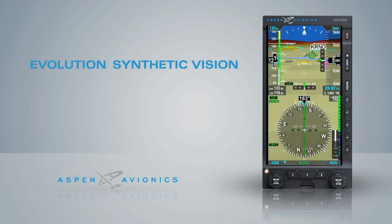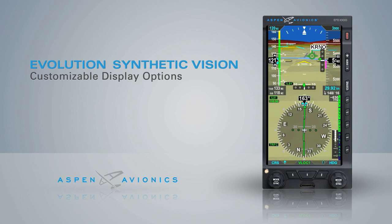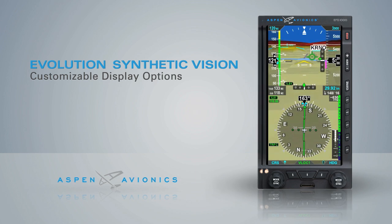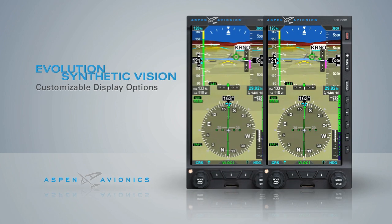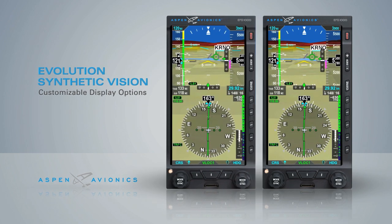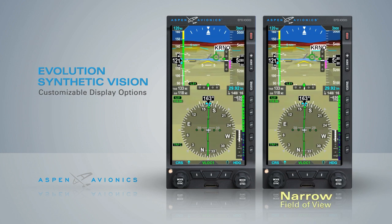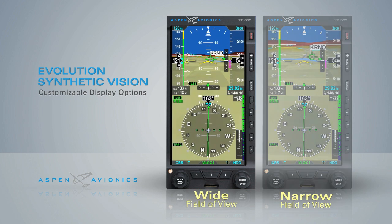Unique to Evolution Synthetic Vision is the ability to customize the display layout to suit individual preferences, including the flexibility to toggle different fields of view. For example, a narrow view for the approach phase, or wide when en-route.